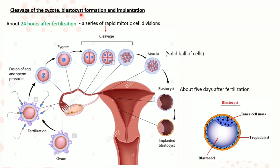Cleavage of the zygote, blastocyst formation and implantation. About 24 hours after fertilization, a series of rapid mitotic cell divisions take place in the zygote. This is known as cleavage. The cleavage of the zygote begins in the oviduct as it moves forward towards the uterus by ciliary and peristaltic movements — rhythmic wave-like contractions and relaxations of the muscles. These movements help the zygote to move forward towards the uterus. Cleavage continues, forming a solid ball of cells called the morula.